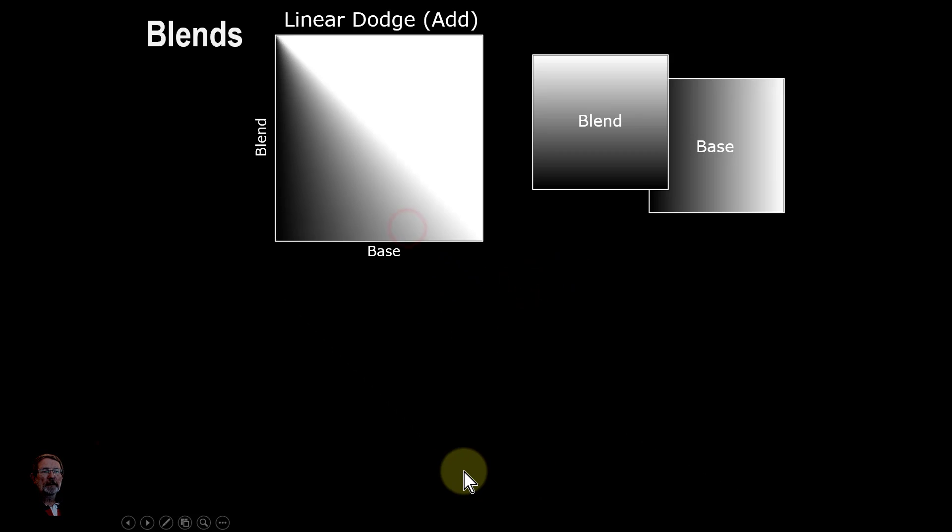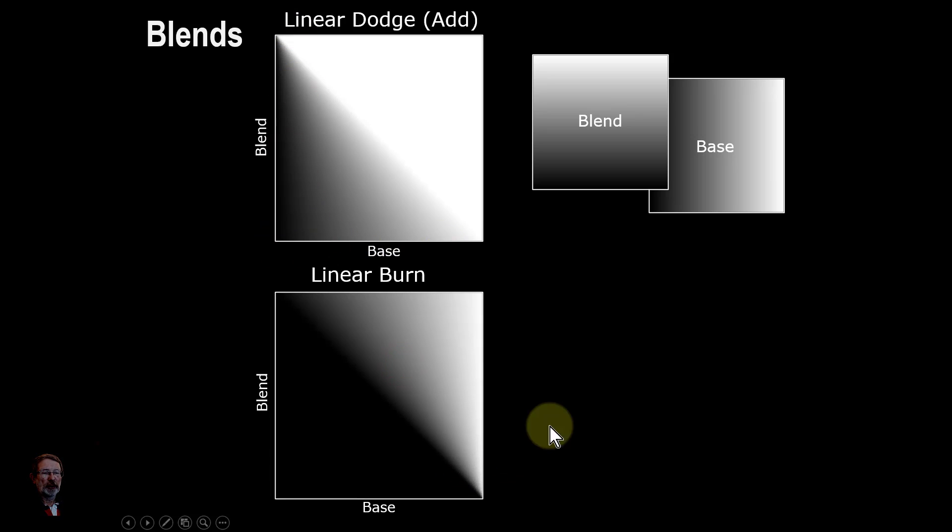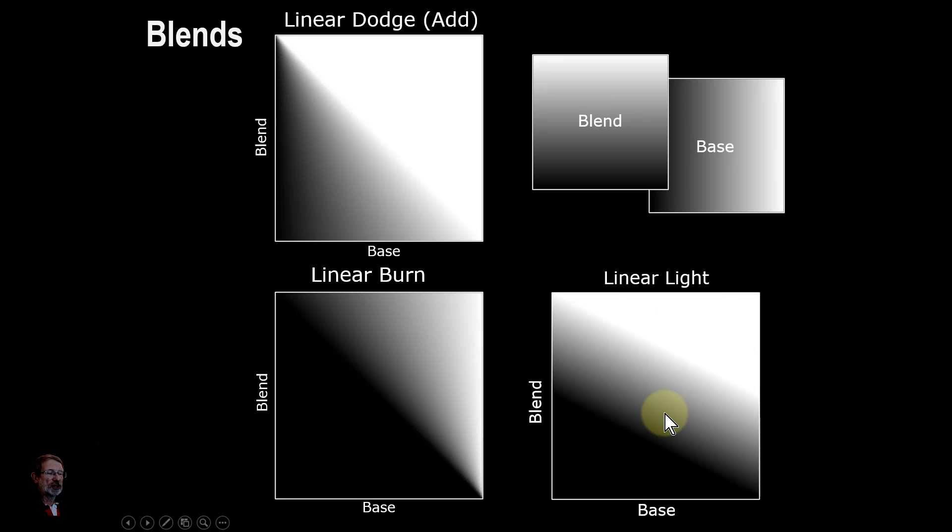So do the same thing with the linear dodge. So you've got base going this way, blend this way, and then you burn that way. And you've got a very similar thing going on, which is like this. And this is surprisingly, being that it is very similar to the vivid light, because the calculations turn out to be really different. But you get a very similar effect.